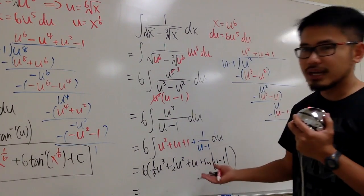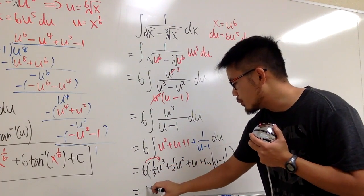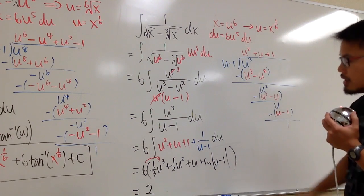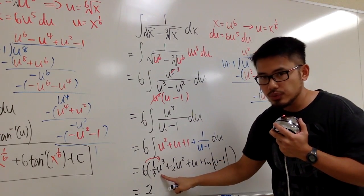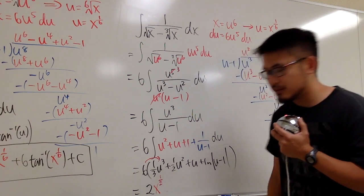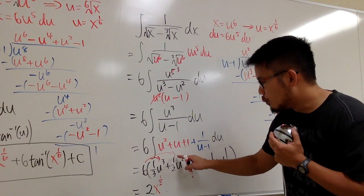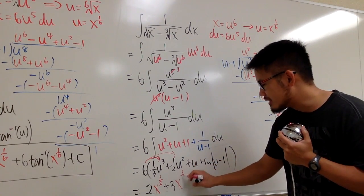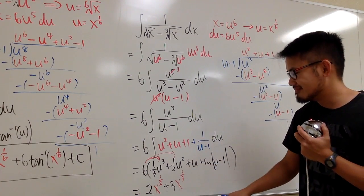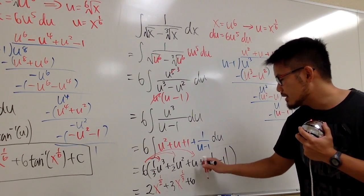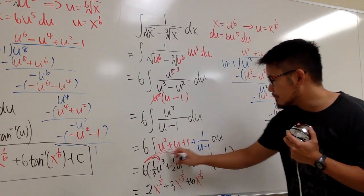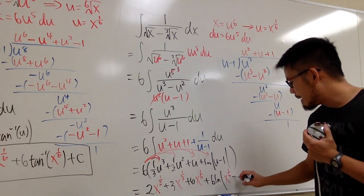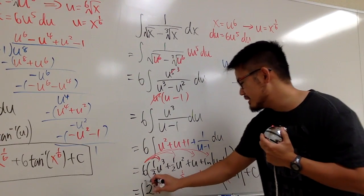So we integrate 6 times (u squared + u + 1 + 1/(u−1)) du. This gives 6 times [(1/3)u³ + (1/2)u² + u + ln|u − 1|]. Now back-substitute u = x to the 1/6: 6 times (1/3) = 2, so we get 2x to the 1/2, plus 3x to the 1/3, plus 6x to the 1/6, plus 6 ln|x to the 1/6 minus 1|, plus C.